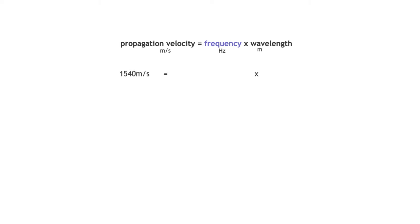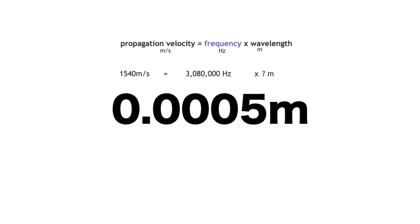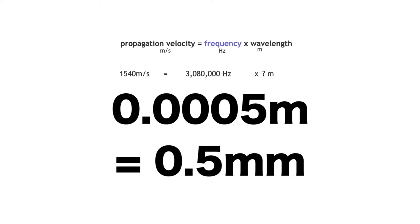Using the equation — propagation velocity equals frequency multiplied by wavelength — in an example with soft tissue: propagation velocity is 1,540 m/s, and frequency is 3,080,000 Hz (3.08 MHz). To calculate wavelength, do 1,540 divided by 3,080,000, which gives 0.0005 meters, equal to 0.5 millimeters. This is a very small wavelength — ideal for ultrasound imaging of the human body.